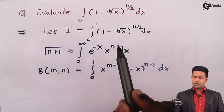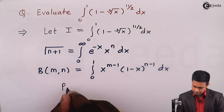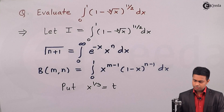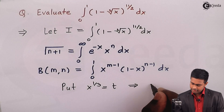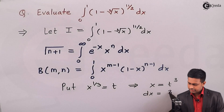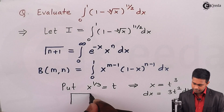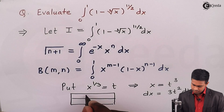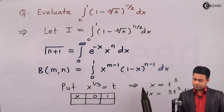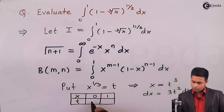For that, I'll substitute cube root of x, that is x^(1/3), as t. So we get x = t³, and dx = 3t² dt. Now let's see the changes in the limits. The limit is currently from 0 to 1 for x. When x is 0, t gives 0, and when x is 1, you get 1. So the limits for t are from 0 to 1 again.